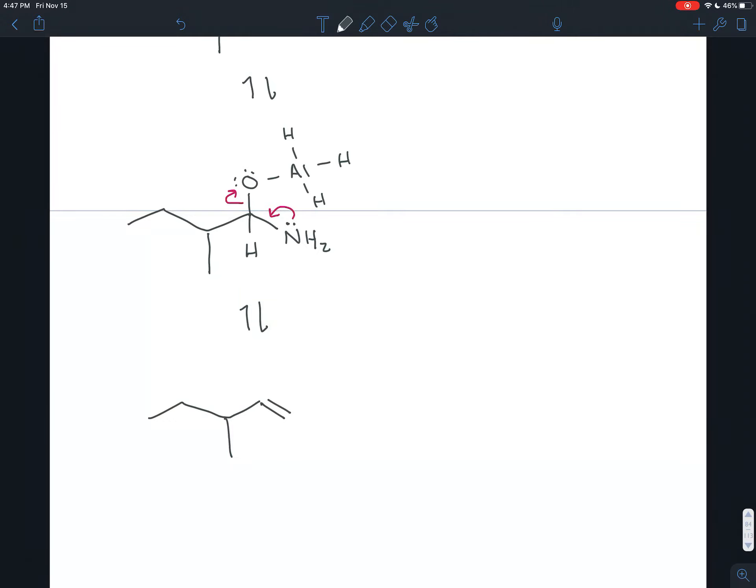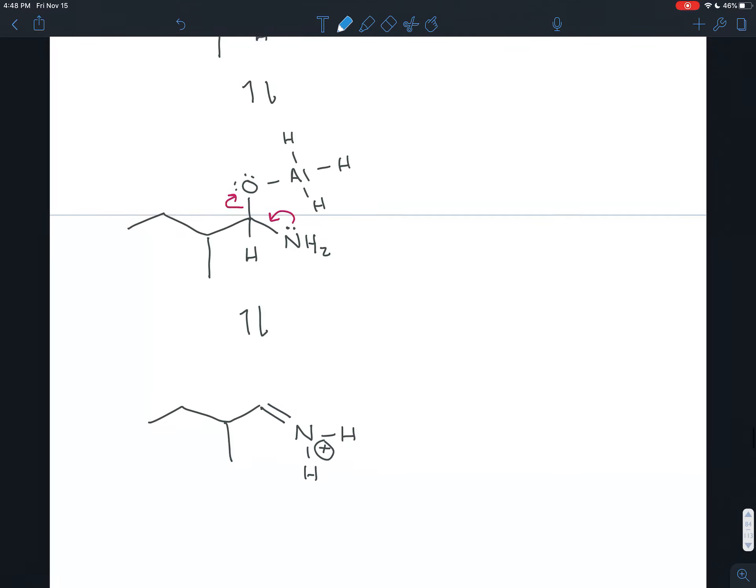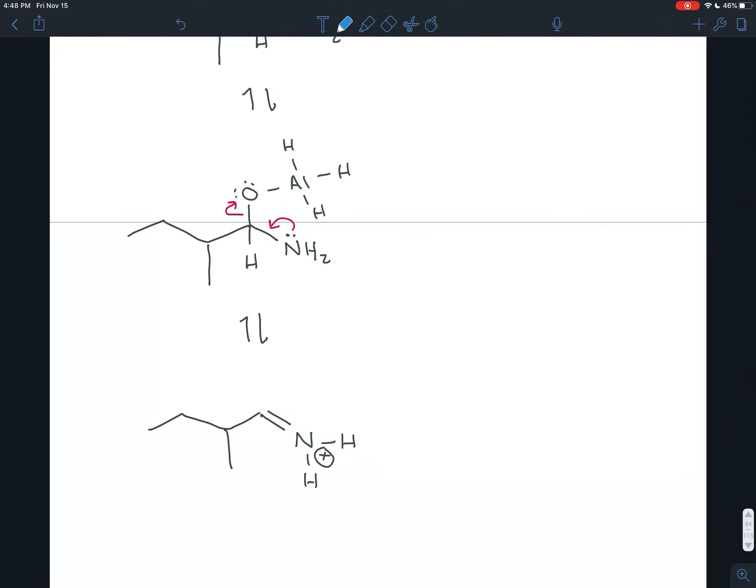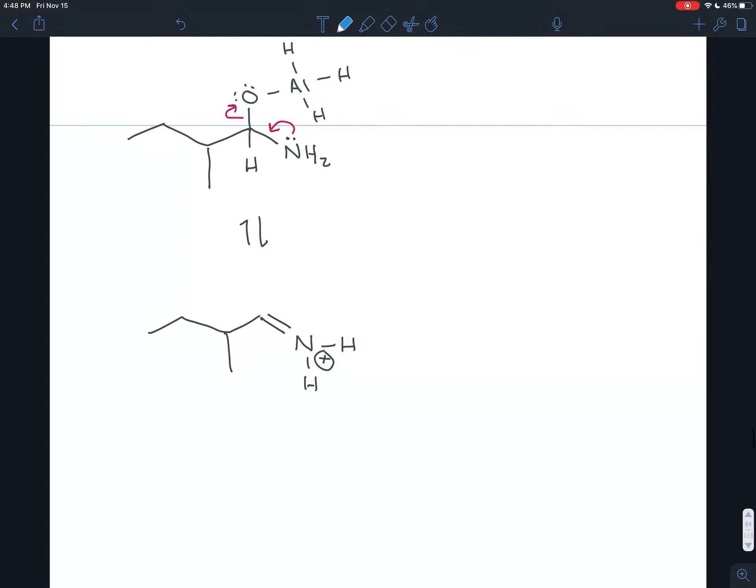So you'd have a double bond now to this nitrogen, which has two hydrogens on it. That's four bonds altogether, so it's slightly positive. Now that means that the carbon bonded to it is a really strong electrophile. It's losing electron density to the nitrogen because of its electronegativity, but also because the nitrogen has the positive charge that it can use to attract electron density toward itself.